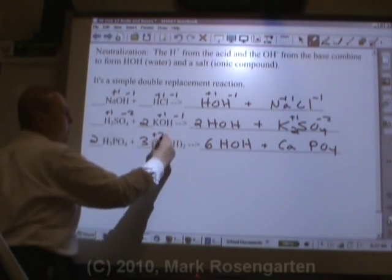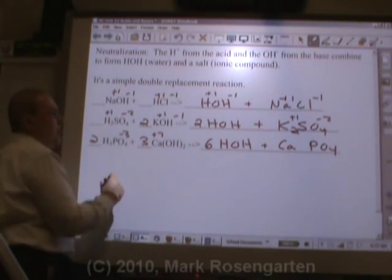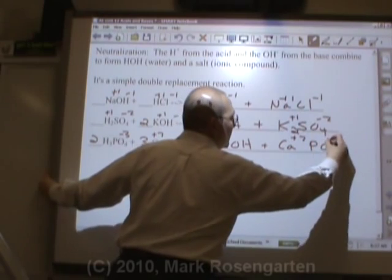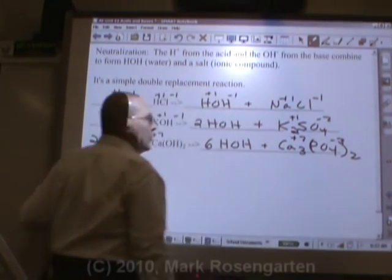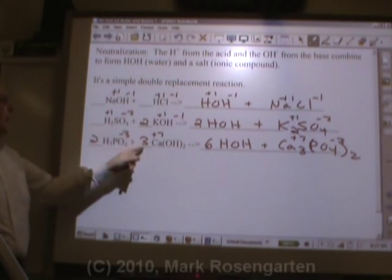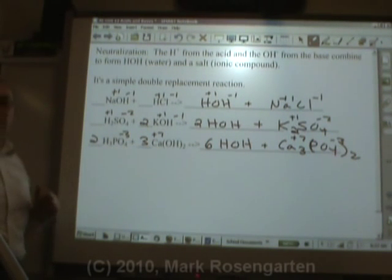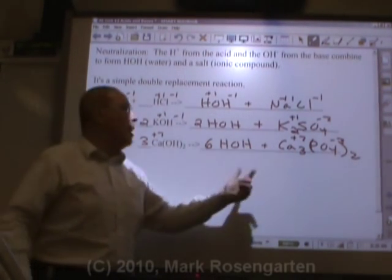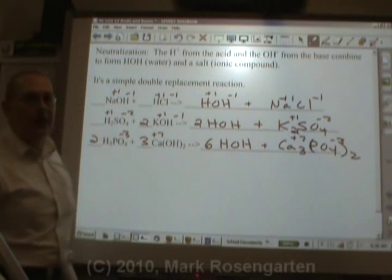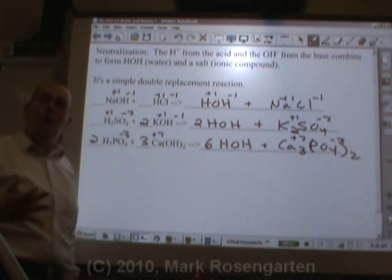Two times three is six. Then we're going to have calcium and phosphate. Calcium is plus two. Phosphate's minus three. Ca3(PO4)2. Hey, look, it's balanced. Three Ca's, two PO4s. By balancing the hydrogens and the hydroxides, you automatically properly balance the calciums and the phosphates. Is that cool or what?